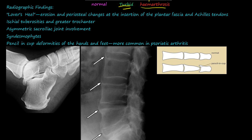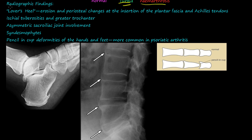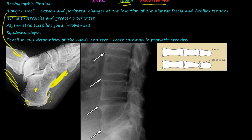The radiographic findings include lover's heel — erosions and periosteal changes at the insertion of the plantar fascia and Achilles tendon. You can see changes at the connection of the calcaneus where the plantar fascia inserts on the plantar surface, and changes where the Achilles tendon comes down. Both of these together are called lover's heel.